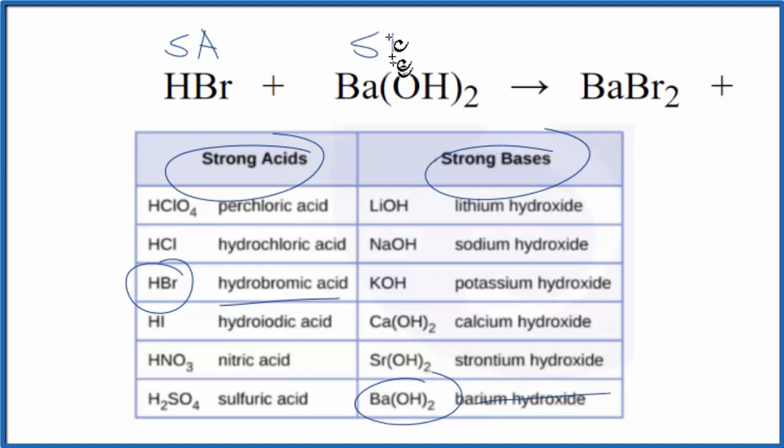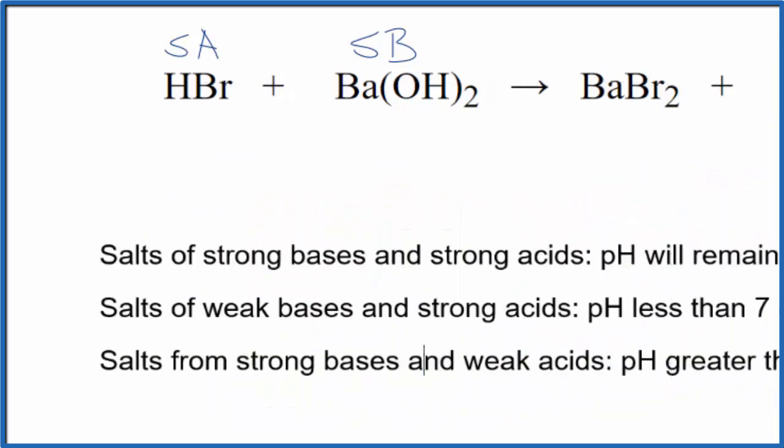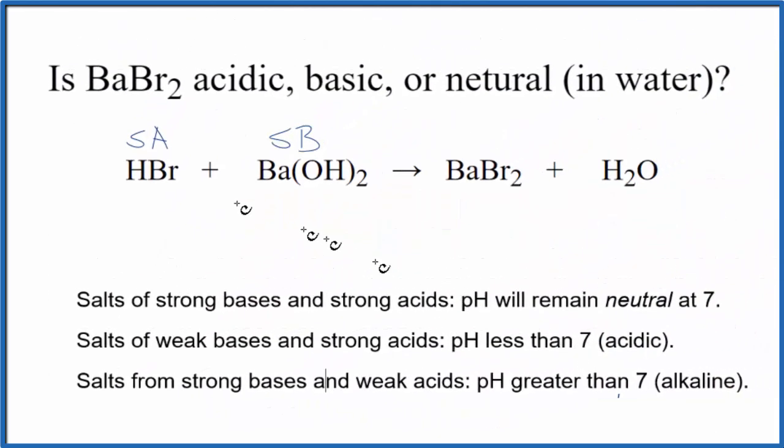So we have a strong acid and a strong base. Now we can use those rules to figure out whether we have an acid, base, or neutral solution. Looking at our rules here, we have a strong acid and a strong base, and that tells us that the pH should remain neutral at 7.